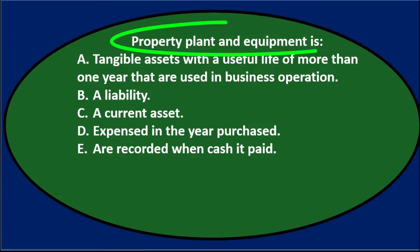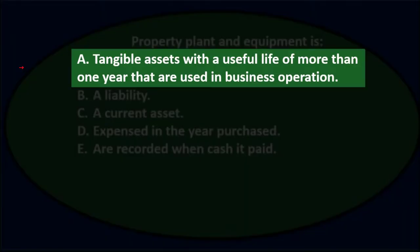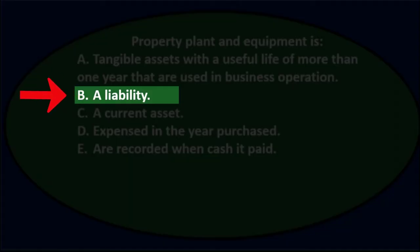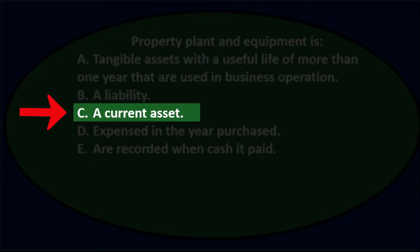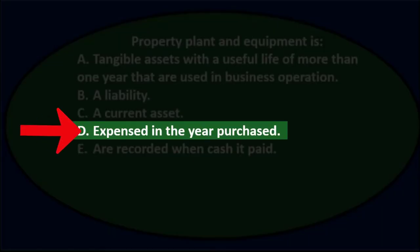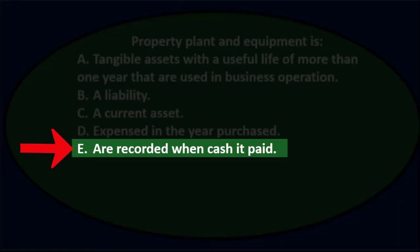Property, plant, and equipment is: A. Tangible assets with a useful life of more than one year that are used in business operations. B. A liability. C. A current asset. D. Expensed in the year purchased. Or E. Are recorded when cash is paid.